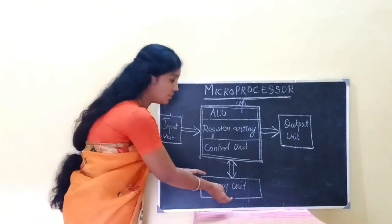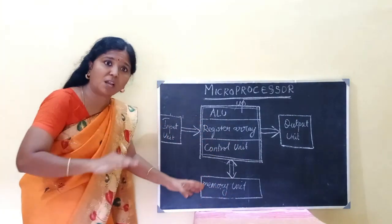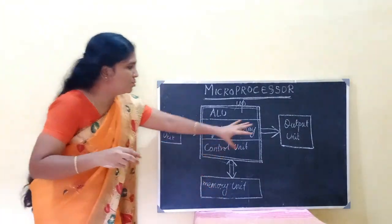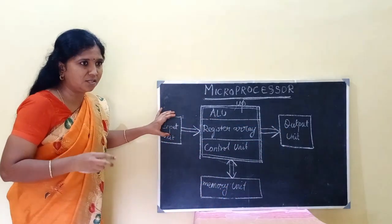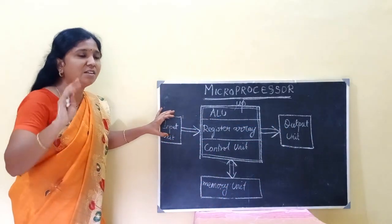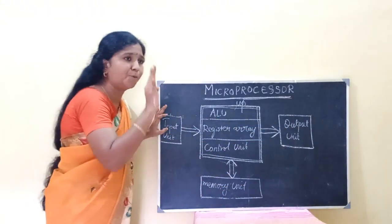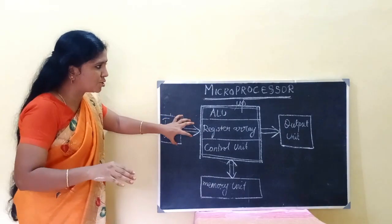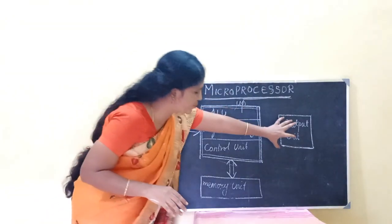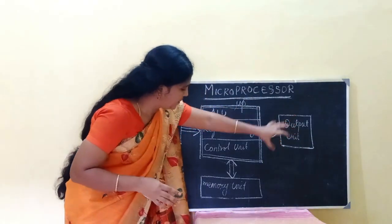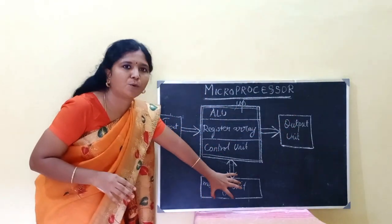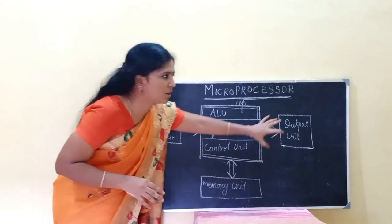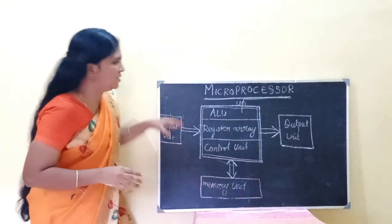Memory: you can save the data and program here. This process is done through the addition and support unit. Input and output produce data, and the program is saved to the main process.